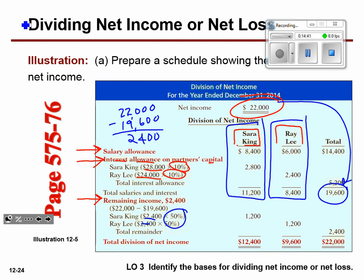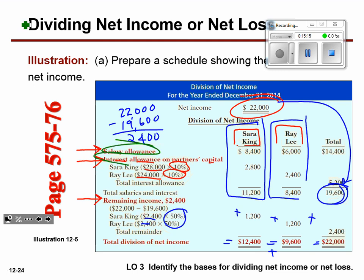So it breaks down to Sarah King getting $12,400 total and Ray Lee getting $9,600 total, which equals $22,000. The simple answer is: we give them a salary allowance, we give them an interest allowance, and whatever is remaining we give them their net share of net income. Three things — all based off that star at the top: net income.